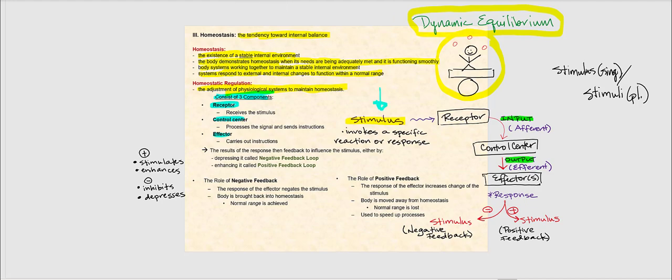If we're reacting to something, that's referred to as the stimulus causing that reaction. The first component of homeostatic regulation is the receptor — it is the receiving end, the sensor. It's there sensing the stimulus. Note that stimulus is singular, and if there are two or more, we use the word stimuli — stimuli is the plural form. Once the receptor senses the stimulus and reacts, it's going to send what we call input, or afferent, signals. Input equals afferent.